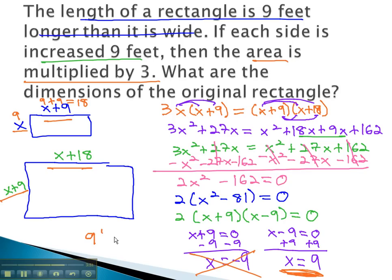We have a 9 foot by 18 foot rectangle, that when each side is increased by 9 feet, the area is multiplied by 3. By drawing two rectangles and showing the differences in their size, we multiply the small one by 3 to equal the large one to get an equation we can solve.